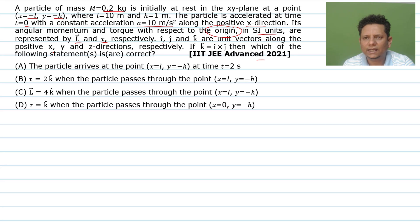Its angular momentum and torque with respect to origin - this is the important part, with respect to origin - in SI units are represented by L vector and τ vector respectively. i, j, k are unit vectors along the positive x, y, z directions respectively. If k = i cross j, then which of the following statements is or are correct?